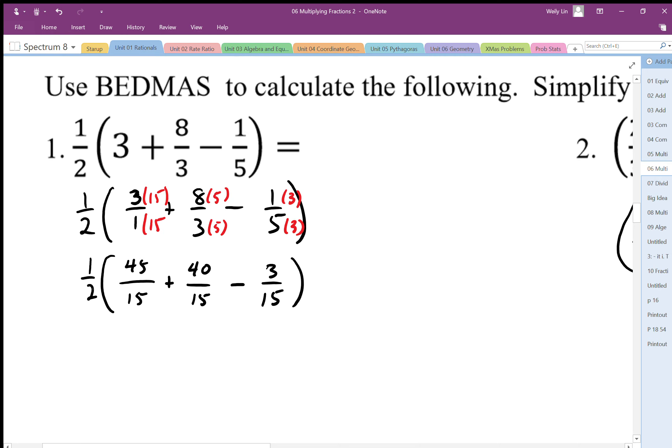Okay, so what do we have here? We're going to end up with 1 half of 45 plus 40 minus 3, which works out to be 82 over 15.